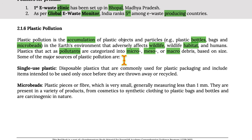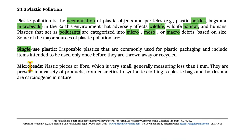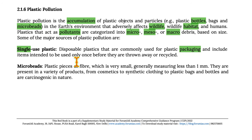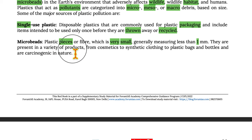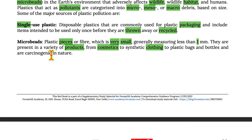Some major sources of plastic pollution include single-use plastics — disposable plastics commonly used for packaging, intended to be used only once before being thrown away or recycled. Microbeads are plastic pieces or fibers that are very small, generally measuring less than one millimeter. They are present in cosmetics, synthetic clothing, plastic bags and bottles, and are carcinogenic in nature.